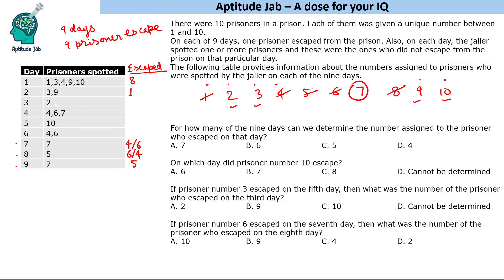Now let us look from the third day onward. On day 3, prisoner 2 is spotted, so 2 did not escape. It could have been prisoner 3 or 9 who escaped, since prisoner 10 appears on day 5 and could not have escaped on day 3. On the 4th day, prisoners 4, 6, and 7 are spotted, and 10 is given afterward. So on day 4, it could be prisoner 2, 3, or 9 who escaped.